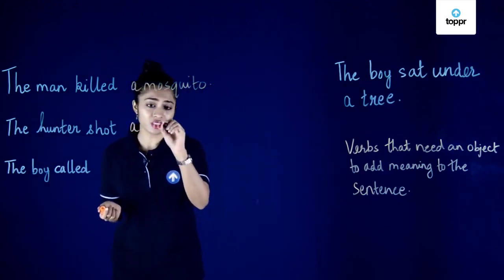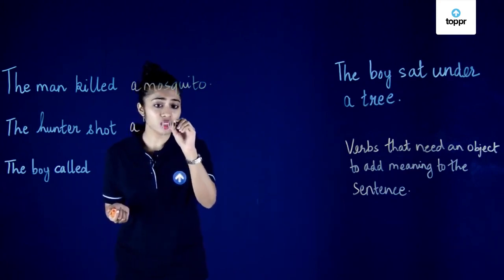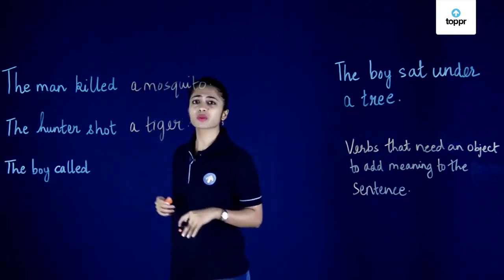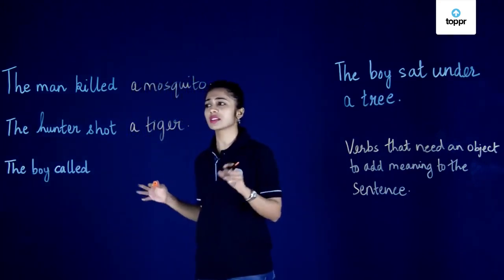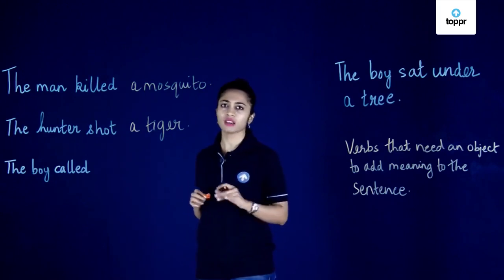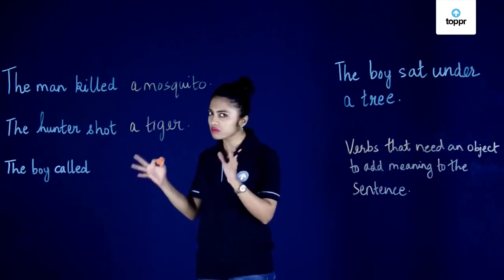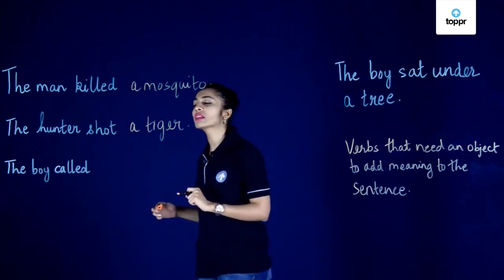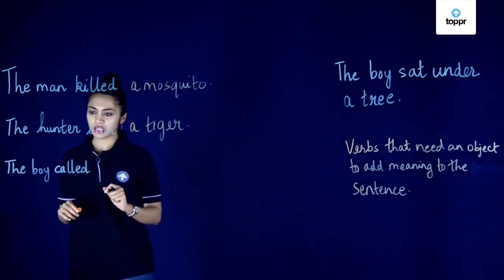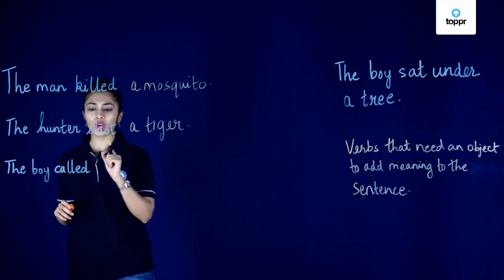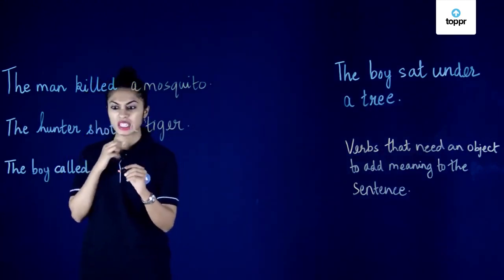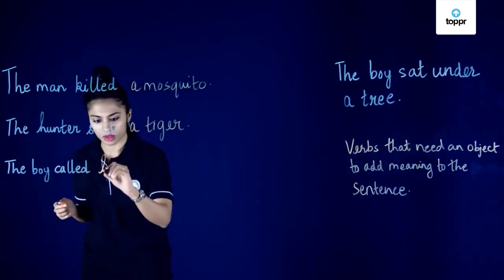Hunting tigers is not good, so don't do that. But in this case we'll just use the sentence: the hunter shot a tiger — sad, but that happened. And the third sentence is the boy called — I think the boy called his mother.